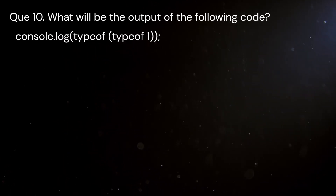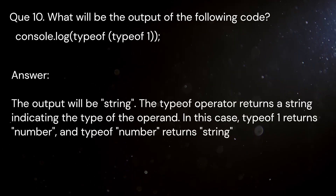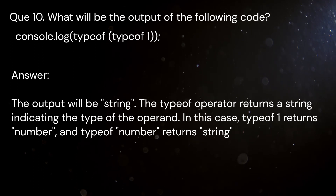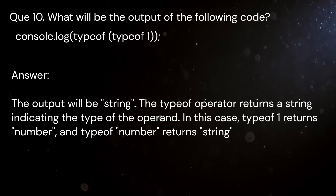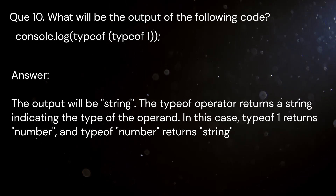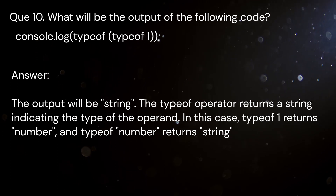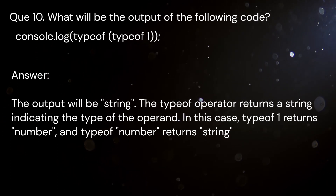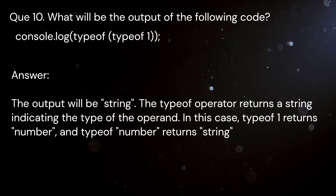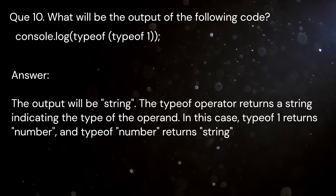Question 10: What will be the output of the following code? console.log(typeof typeof 1). Answer: The output will be 'string'. The typeof operator returns a string indicating the type of the operand. In this case, typeof 1 returns 'number', and typeof 'number' returns 'string'.